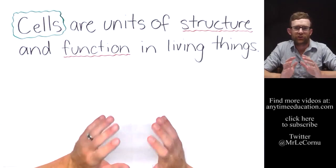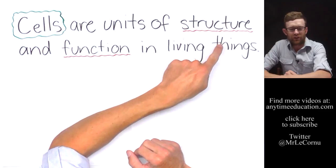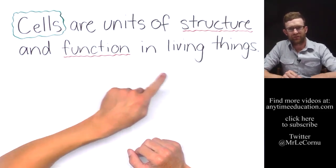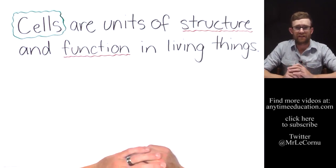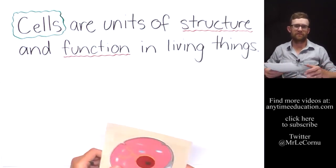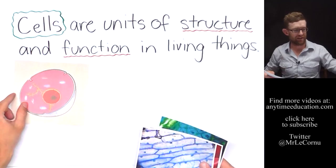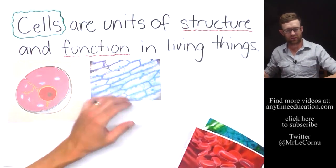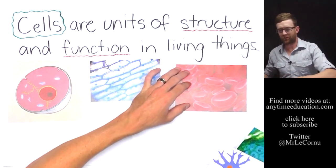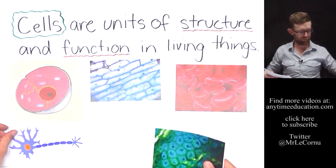Cells are units of structure and function in living things. If it's a living thing, it contains cells. Plants, animals, bacteria, fungi—all contain cells and are made of cells.